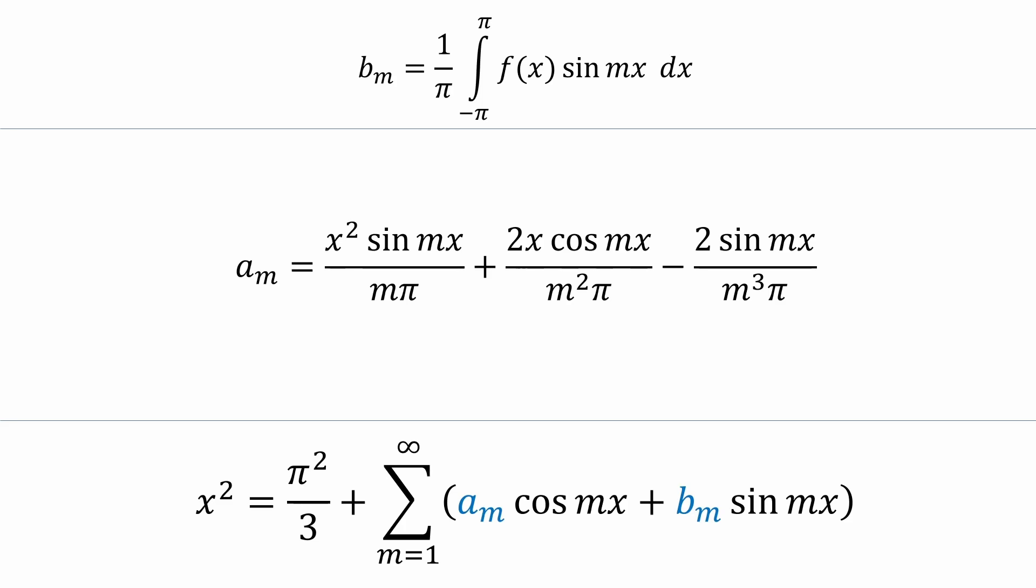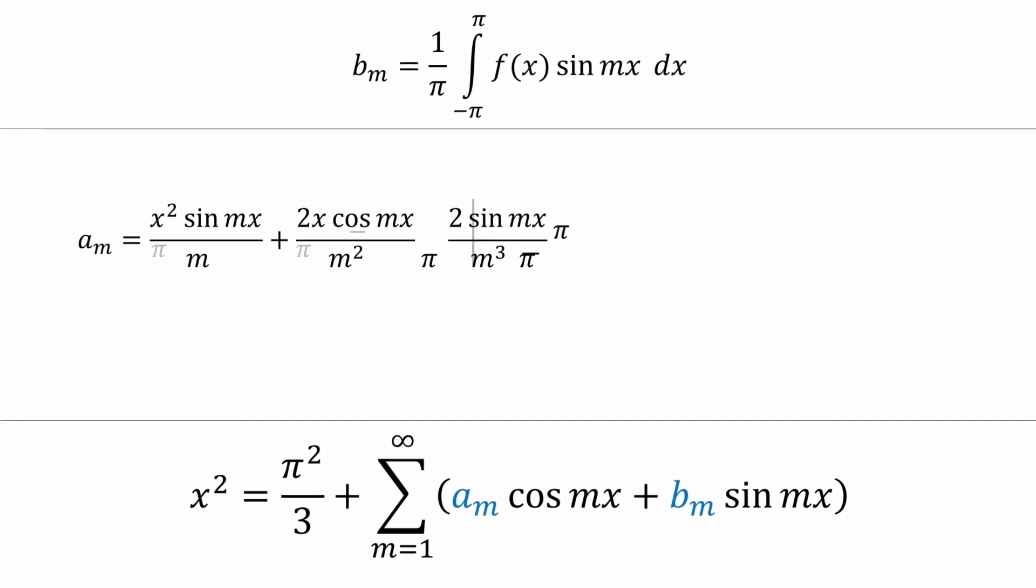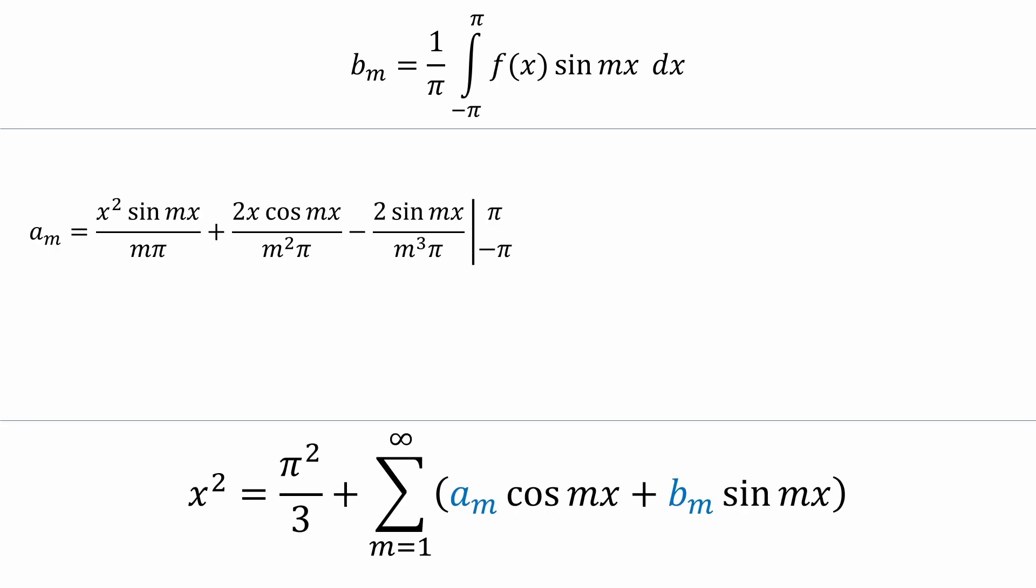Remember, aₘ is a definite integral with limits from negative π to π, so let's evaluate and see what we get. Let's recall that our original function aₘ was x squared times cosine x. Since x squared and cosine x are both even, so is their product. That means we can adjust our limits from 0 to π and double the integral. When we evaluate, we get this expression.